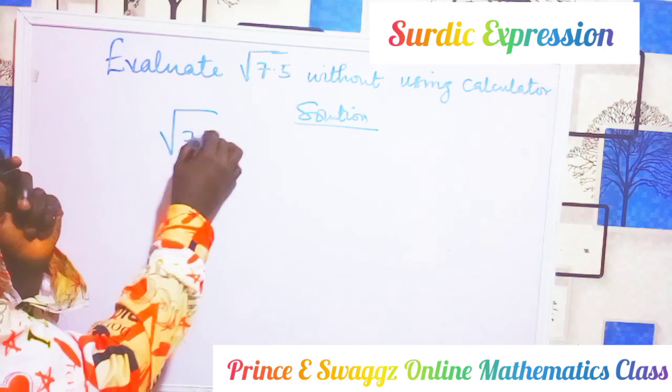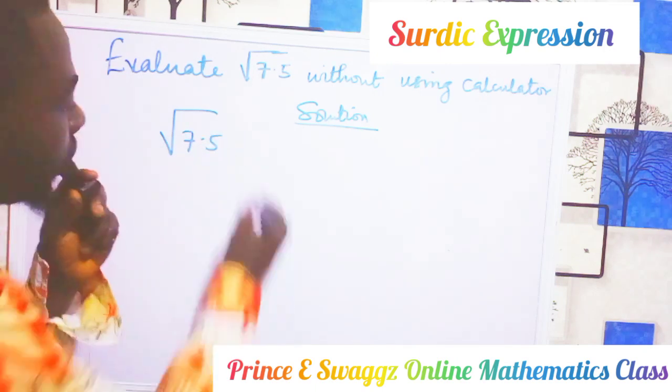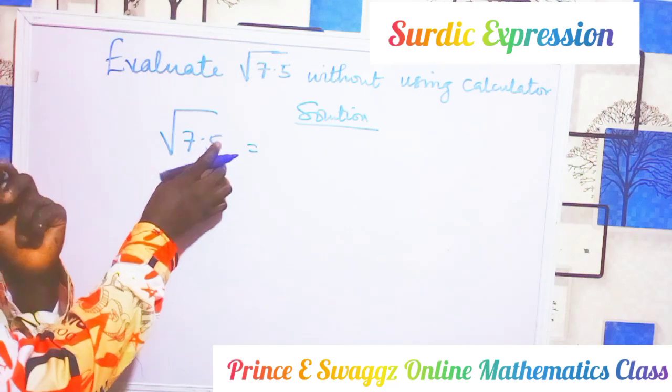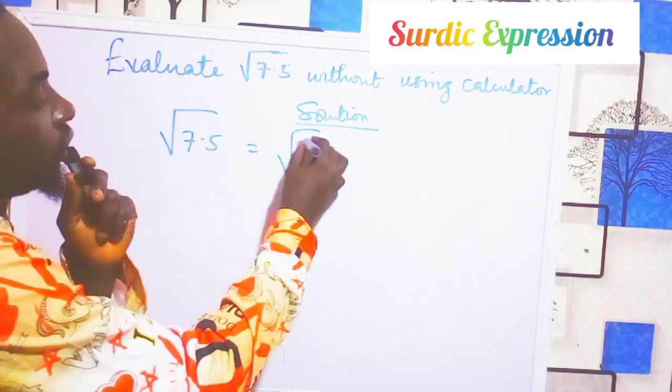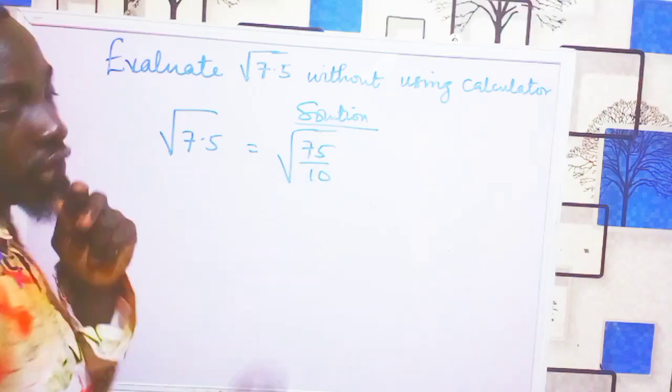Square root of 7.5. The first thing you need to do is change the decimal number to a fraction. That will give us square root of 75 over 10.